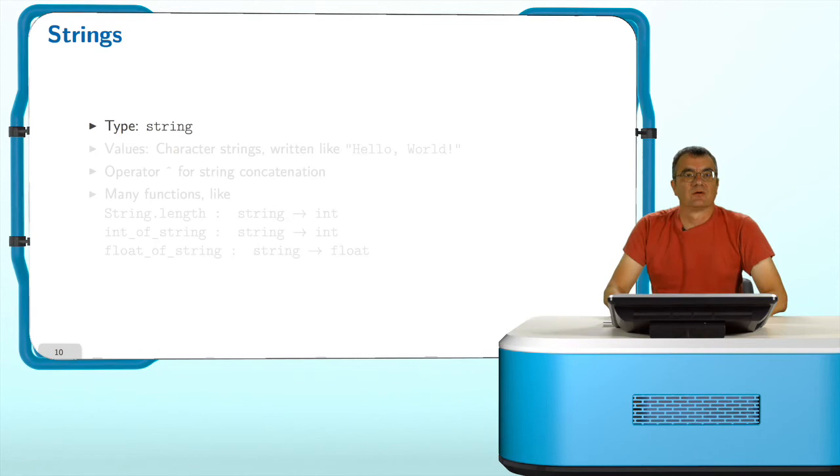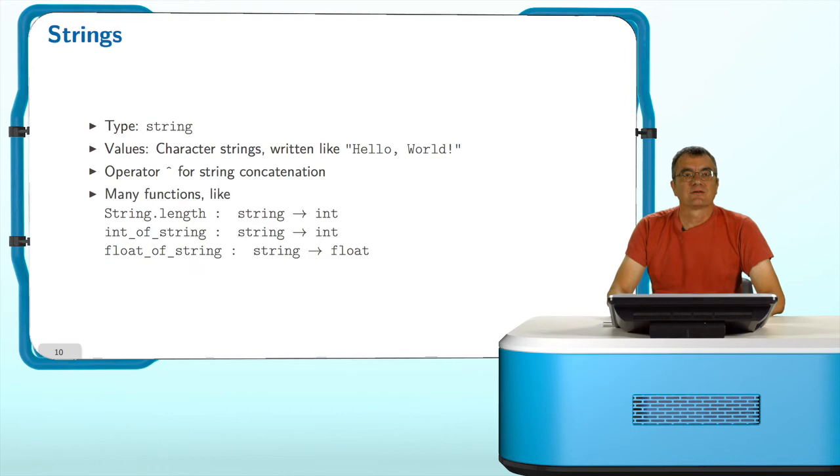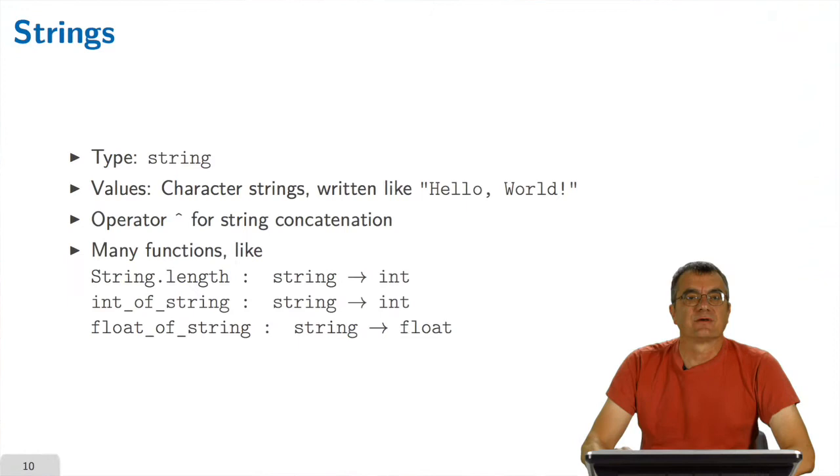Finally, we have the type of strings, as in almost all programming languages. String constants are written between double quotes. You have the operator caret, used as an infix operator to denote string concatenation. And you have lots of usual functions, like calculating the length of a string with String.length. You can convert a string to an integer, provided that a string really means an integer. And in the same way, you can convert a string to a float, provided that you have written a string, which really means a float.